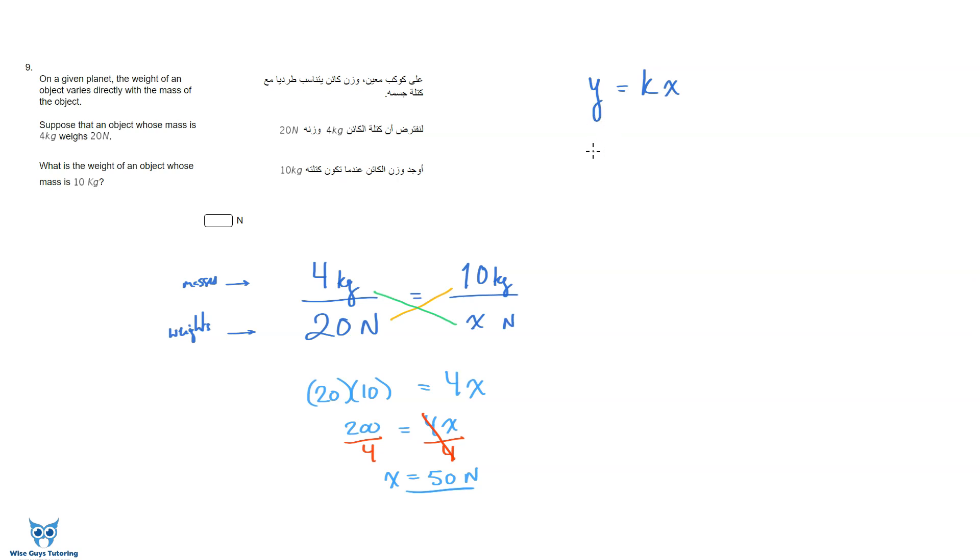So why don't we try this. We'll say y is the weight of an object where x is the mass of an object. Now they've given me one pair, right? They said when the mass is 4, so k times 4, the weight will be 20. So I can figure out this coefficient of proportionality here by dividing both sides by 4 and what that gives me is that k is equal to 5, which means that the weight is always 5 times the mass.